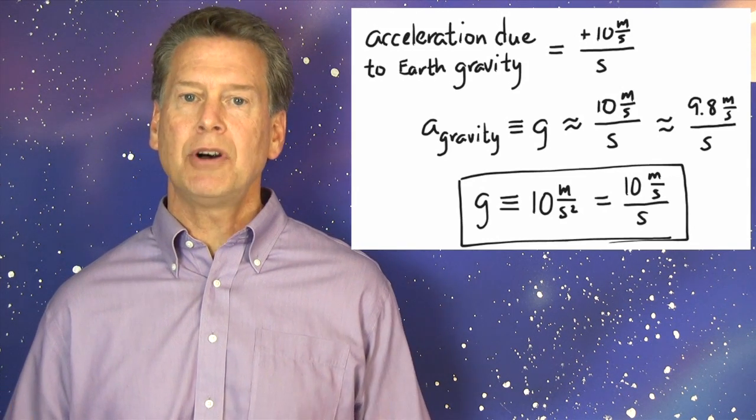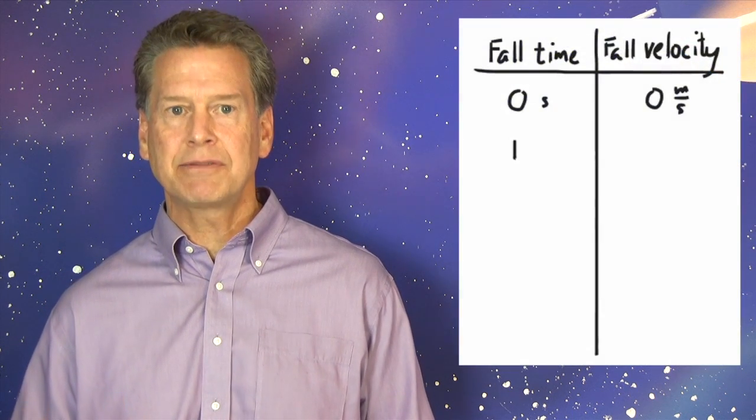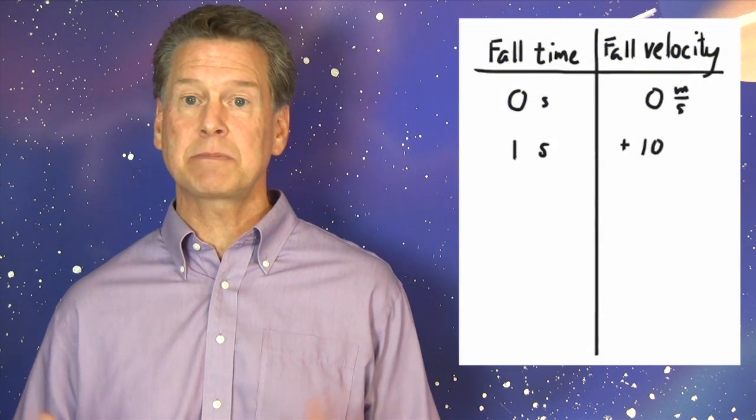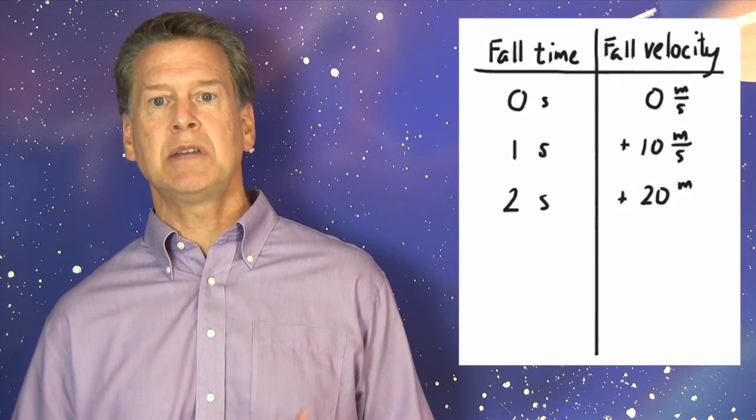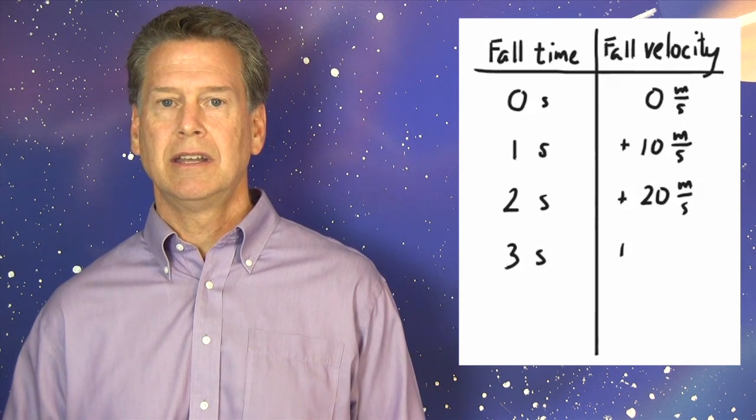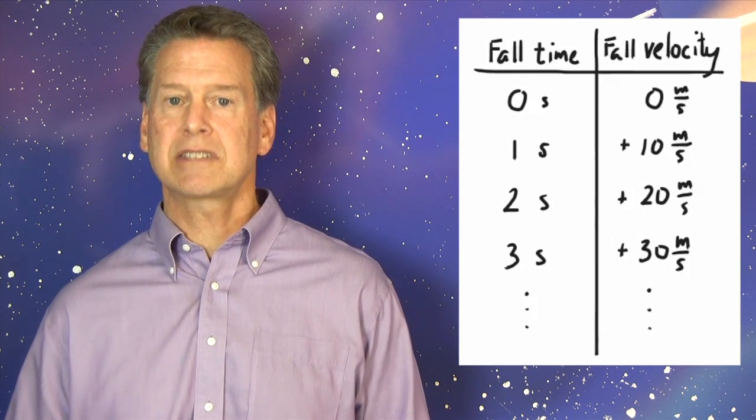So, if an object falls from rest for one second, its velocity at the end of that first second will be 10 meters per second. If it falls for two seconds, its velocity will be 20 meters per second. If it falls for three seconds, 30 meters per second. And so on.